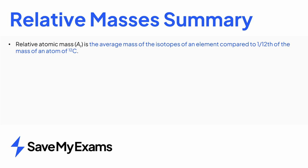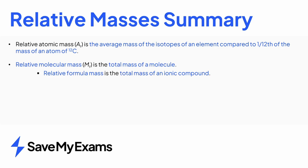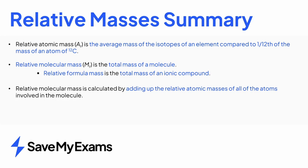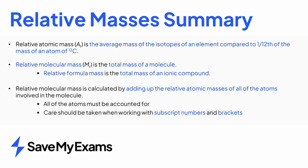You should be able to define relative atomic mass as the average mass of the isotopes of an element compared to one twelfth of the mass of an atom of carbon-12. Relative molecular mass is the total mass of a molecule. If you are dealing with an ionic compound specifically, then it should be called relative formula mass. To calculate relative molecular mass, you add up the relative atomic masses of all the atoms in the molecule or ionic compound. Take care when the chemical formula contains subscript numbers and brackets.